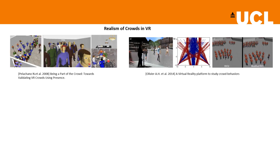Crowd simulation in VR has been studied extensively in the last decade. In particular, the realism of crowds has been evaluated by measuring the level of presence achieved by a human. VR has also been used as an experimental tool to improve the level of realism of microscopic pedestrian simulations, for example to assess local movements such as collision avoidance and trajectories formed by participants against real situations.